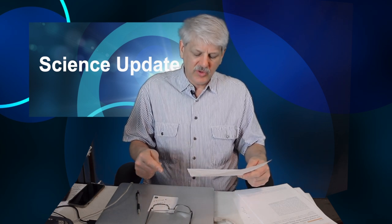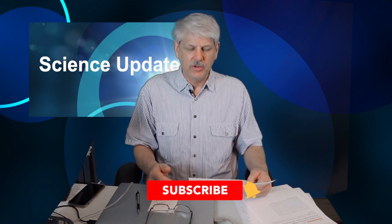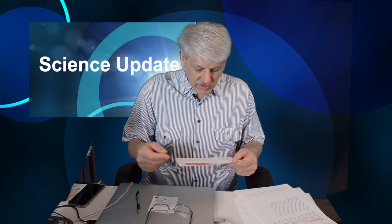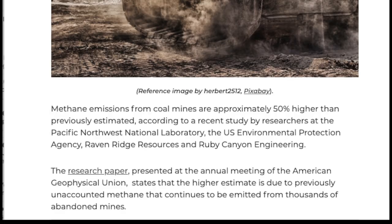There's a link to the abstract of the paper that was presented at the December 2020 meeting of the American Geophysical Union. And that's because it's only an abstract because at annual meetings of these kinds of conferences, the abstracts are all that is available. Somebody delivers the paper with a presentation and gives the full information there. From the paper at mining.com, methane emissions from coal mines are approximately 50% higher than previously estimated according to a recent study by researchers at the Pacific Northwest National Laboratory, the U.S. Environmental Protection Agency, Raven Ridge Resources, and Ruby Canyon Engineering.